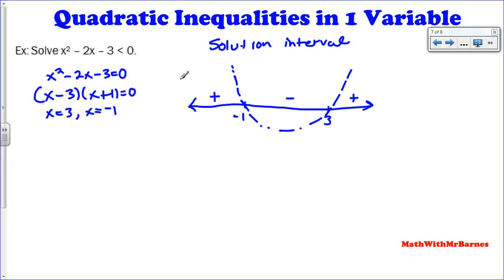Alright, so we're looking for where this, where this guy is less than 0. So we're looking for the negative part of the graph. So that's right here. So the number line gives us it right away. So that's my solution interval. So the solution interval is between negative 1 and 3.